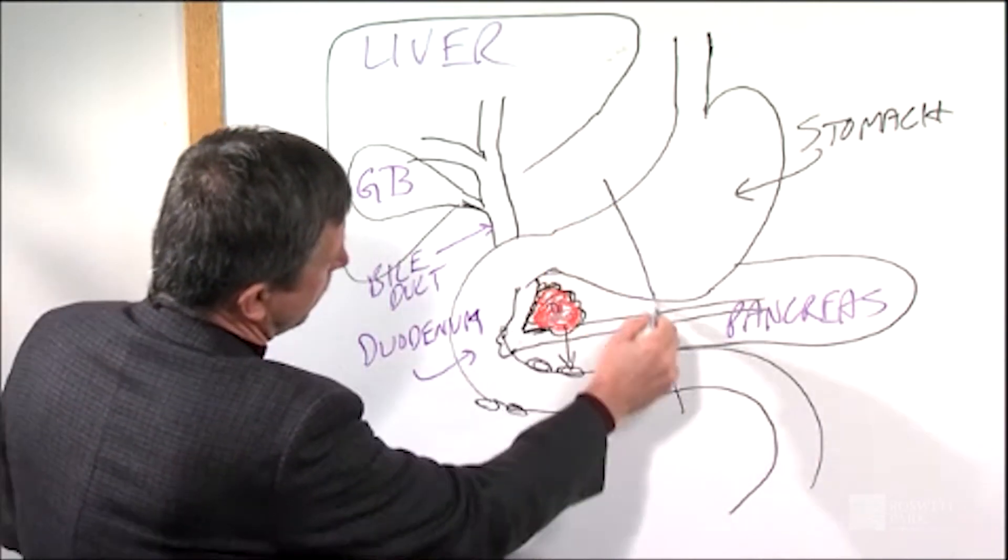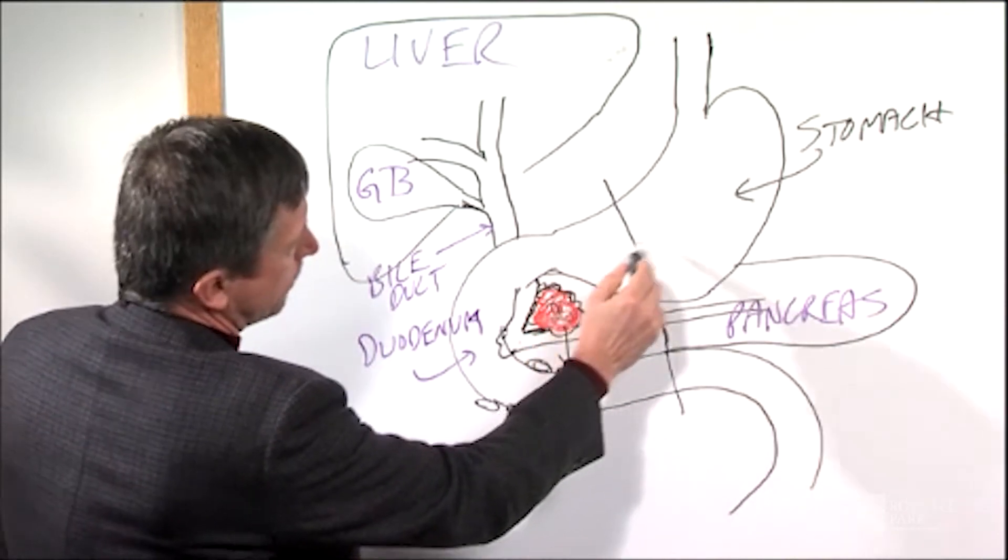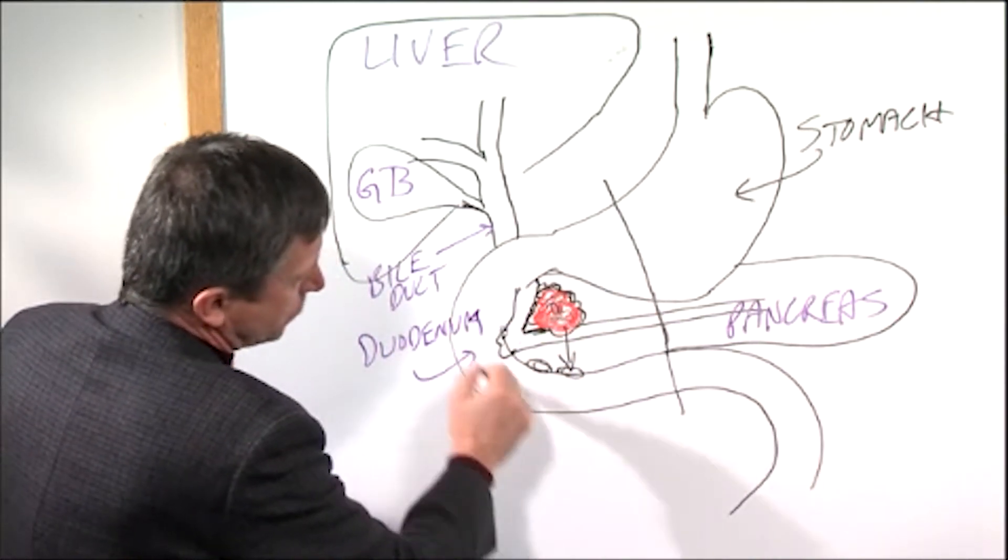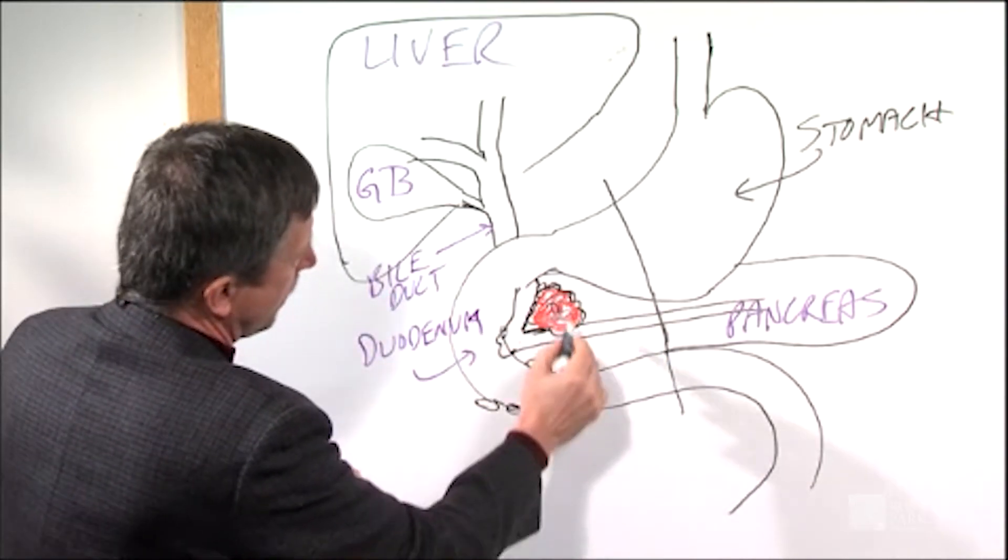So the Whipple procedure, the classic Whipple procedure, involves removing the lower part of the stomach, the first 10 inches of the small intestine, the head of the pancreas and all the lymph nodes around it.